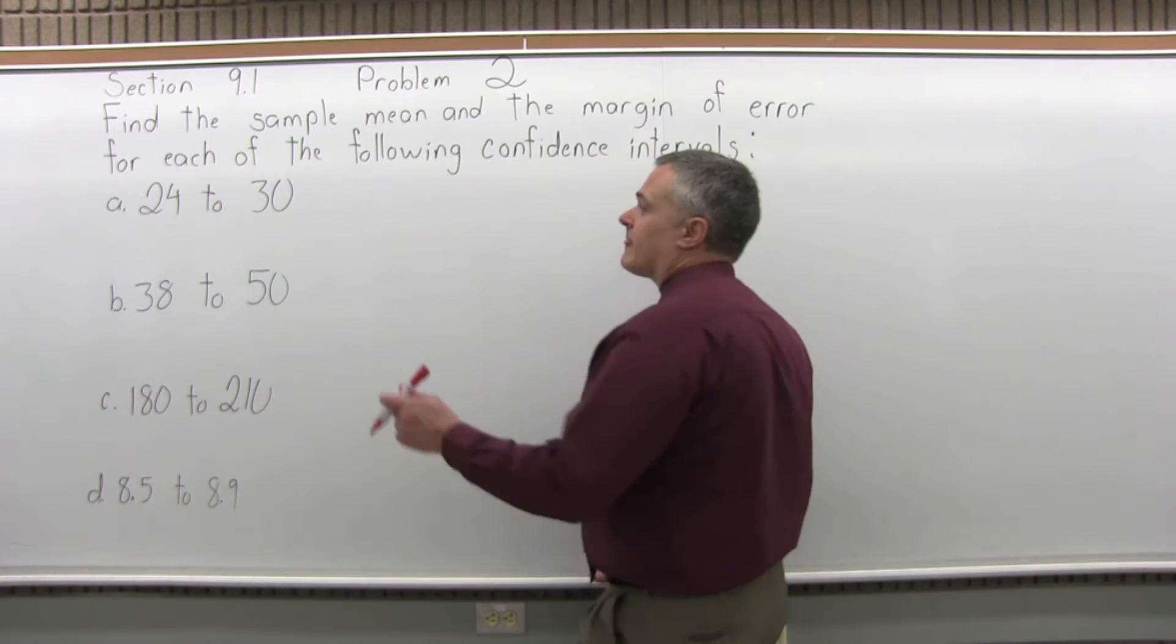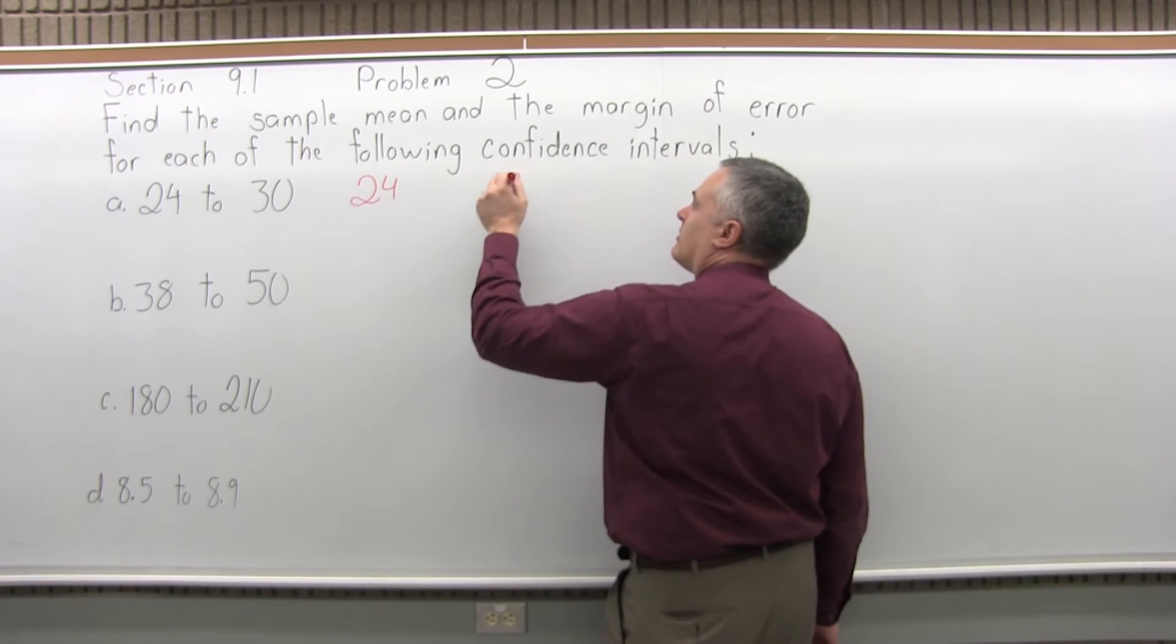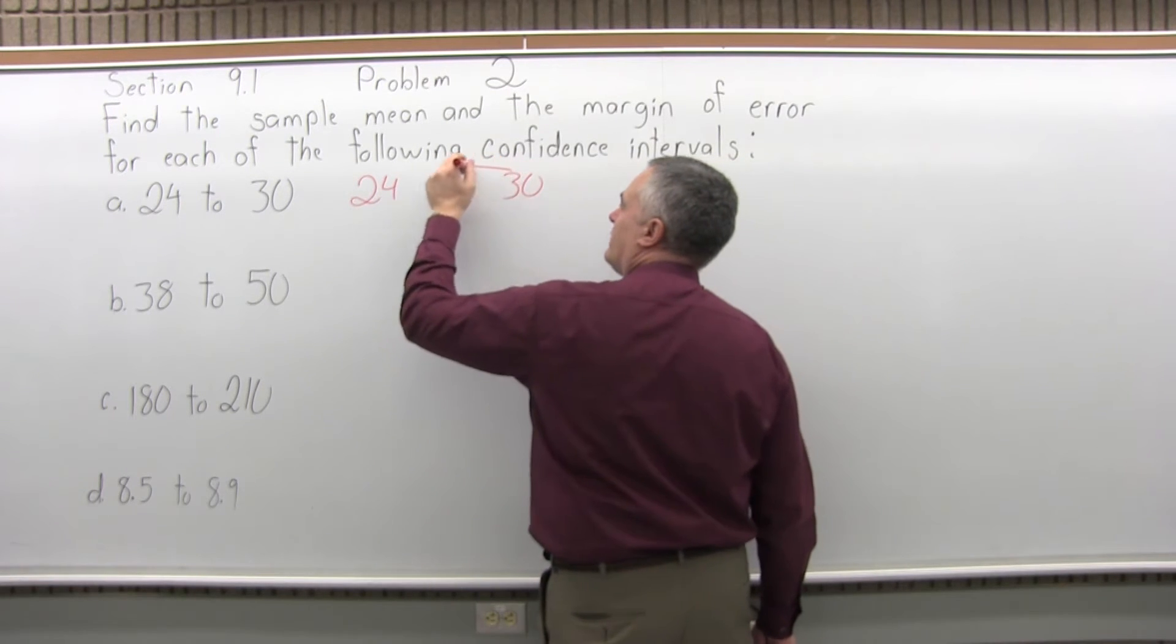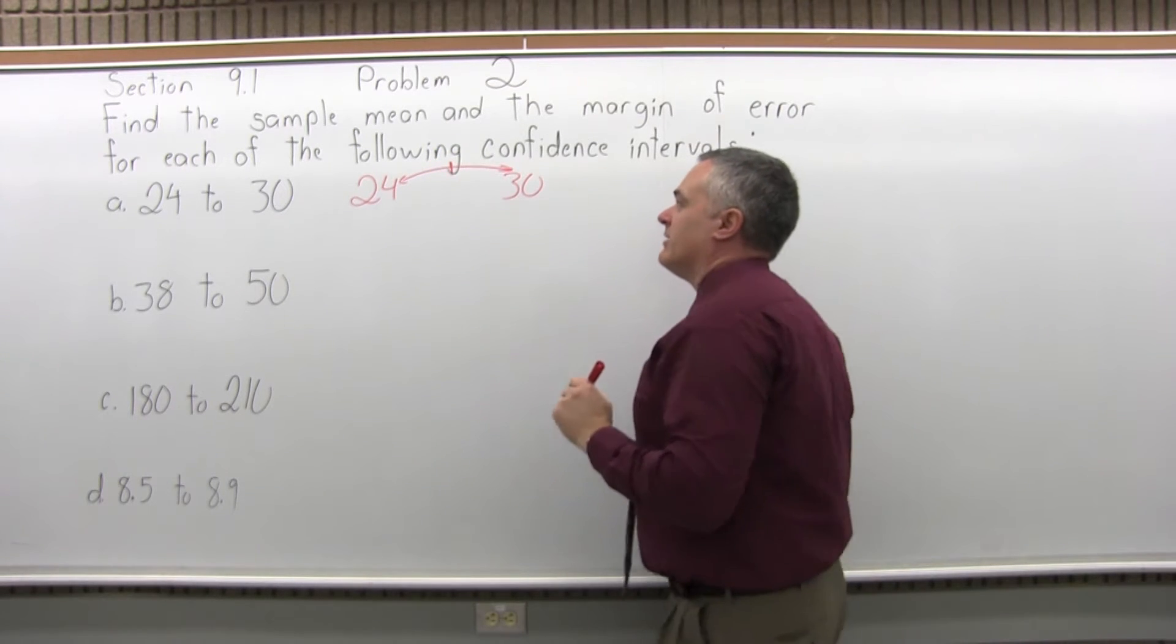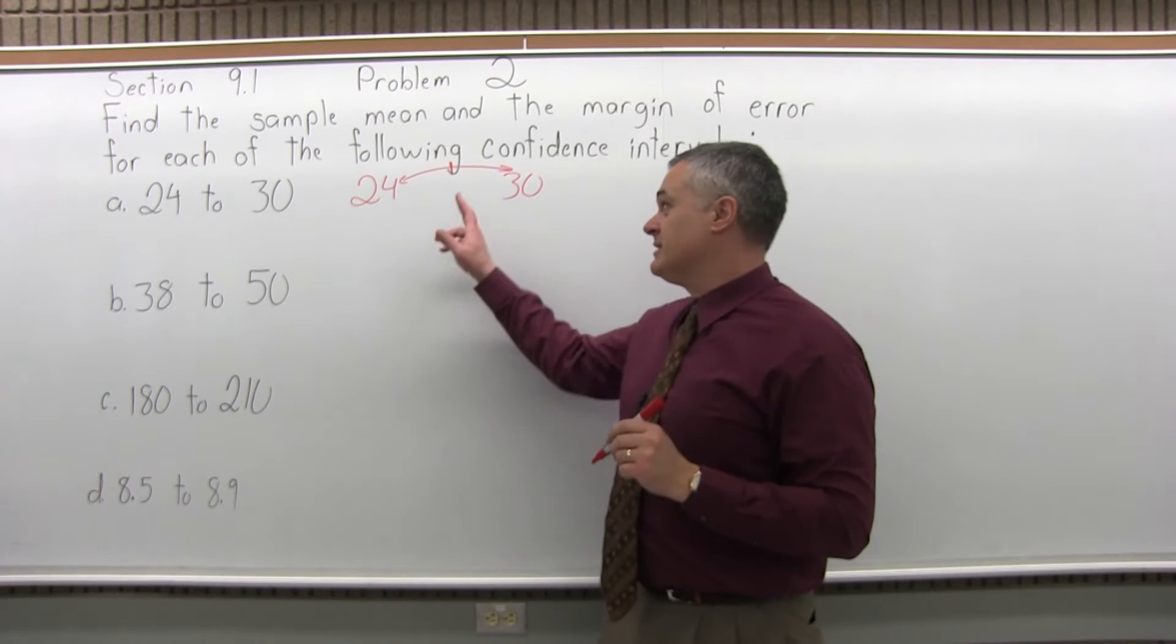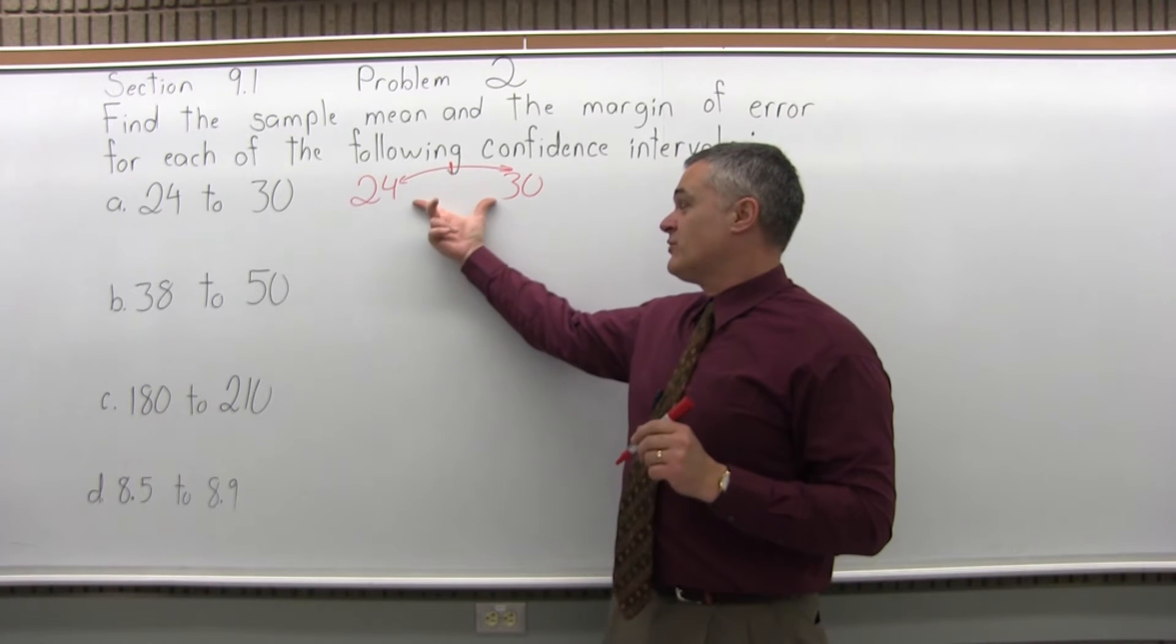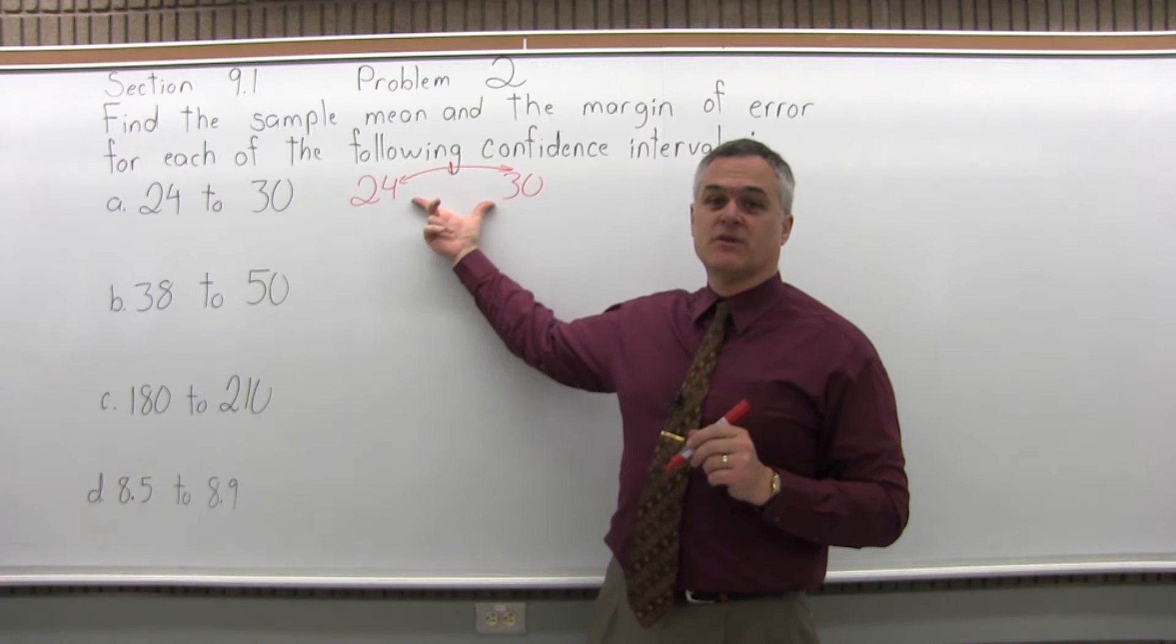A lot of times if you can visualize this almost on a number line it helps. So from 24 to 30 there's a halfway point of your confidence interval where the mean would be the sample mean. So to go from 24 to 30, that's a distance of 6 if you think of it on a number line.